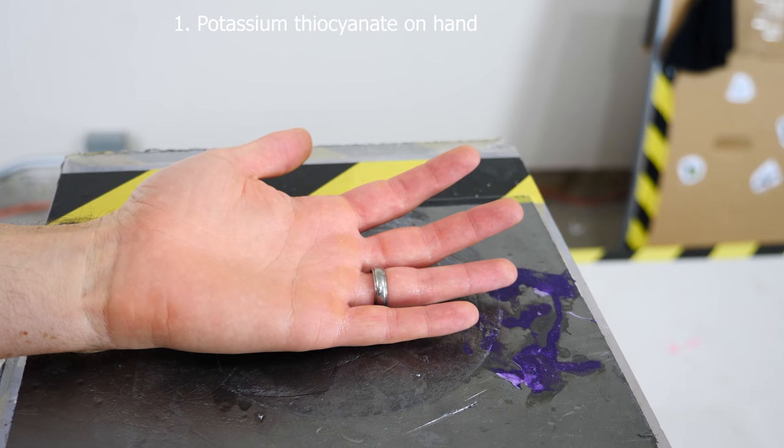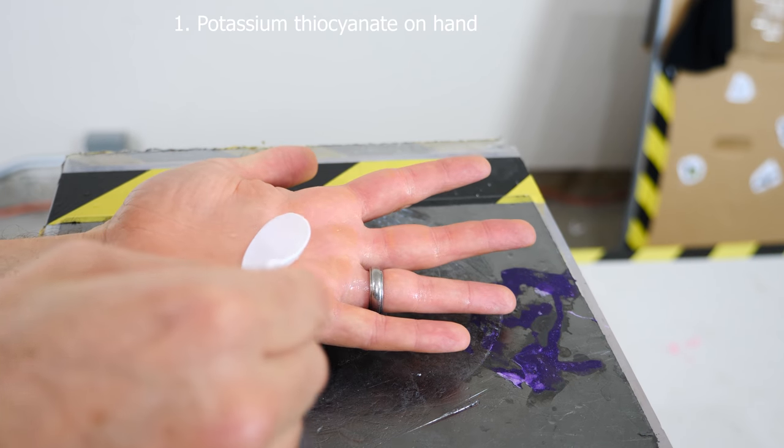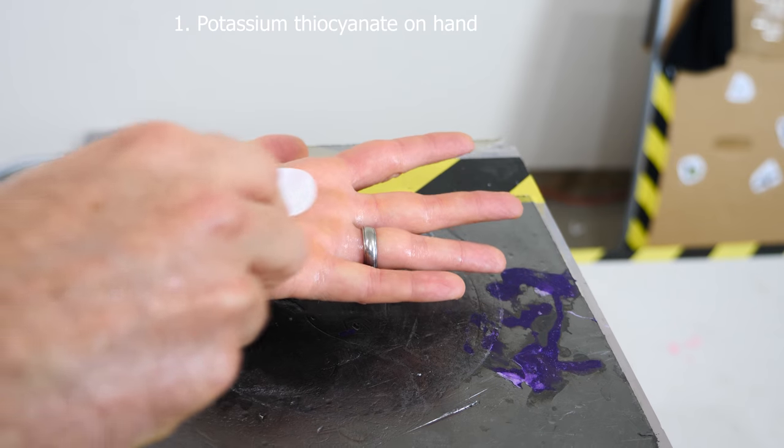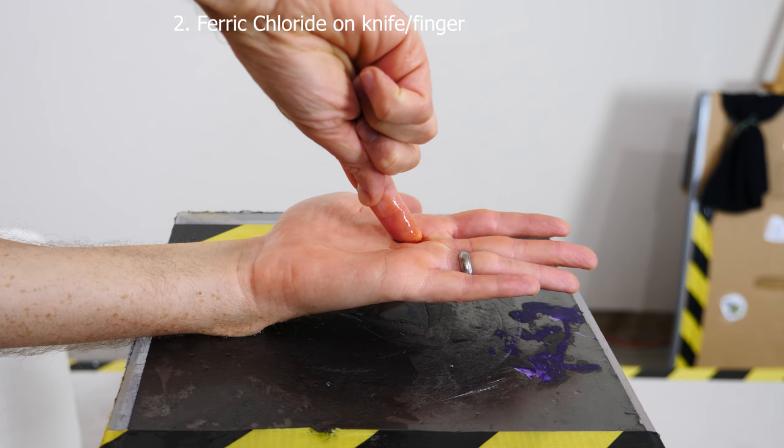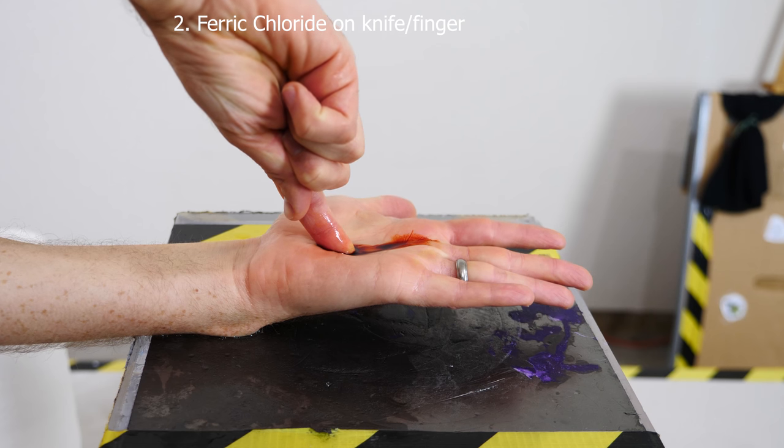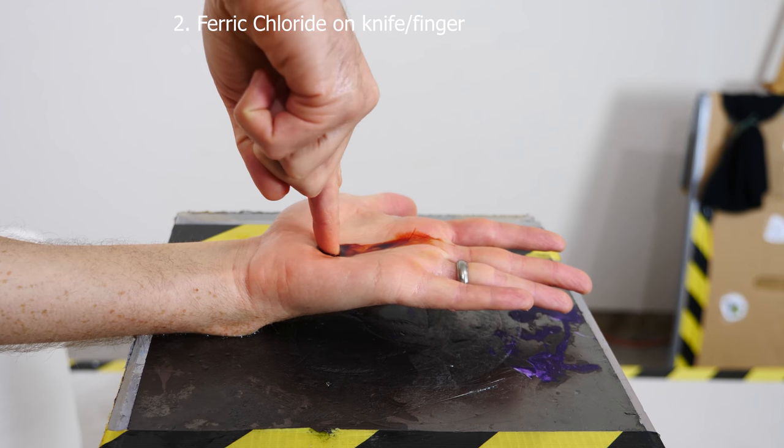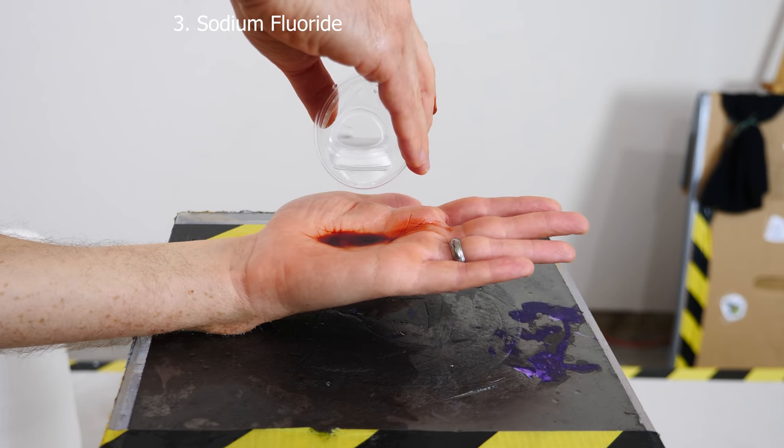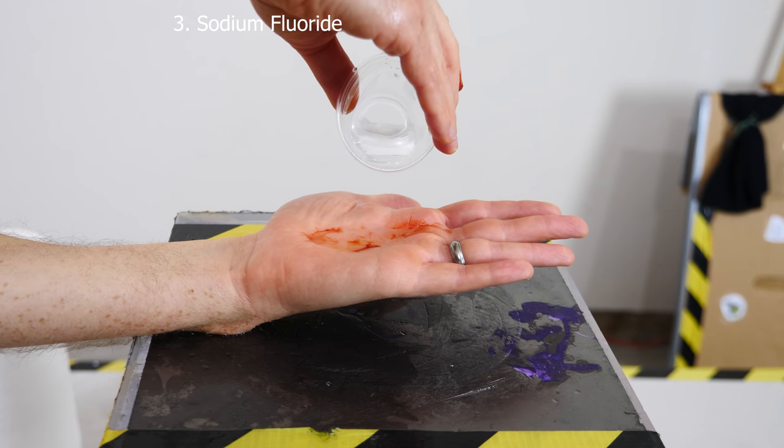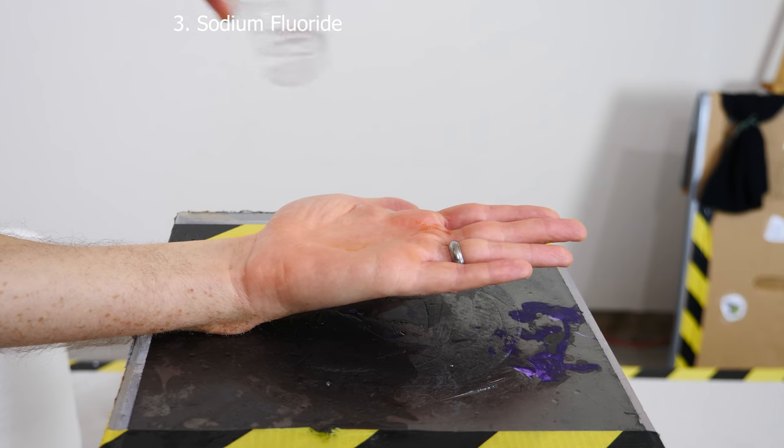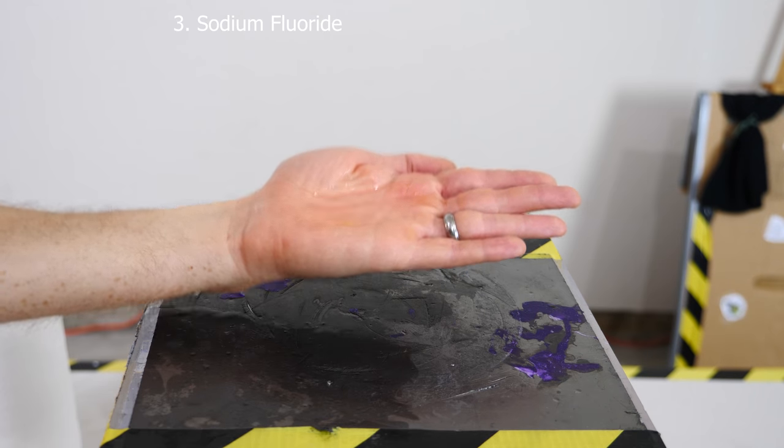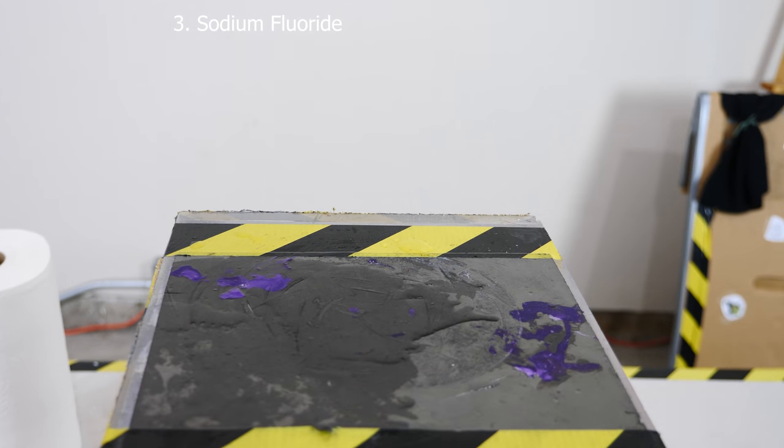So what's happening here is the potassium thiocyanate reacts with the ferric chloride to make this dark red iron thiocyanate. And then when you put the sodium fluoride in the solution, then that fluoride ion really wants to react with that iron more than the thiocyanate ion. And so it reacts and there's no longer iron thiocyanate. So that dark red color disappears.